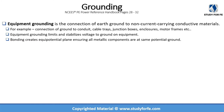Grounding is further divided into two categories: equipment grounding, also called bonding, and system grounding. Equipment grounding is a connection of earth ground to non-current-carrying conductive materials — for example, connection of ground to conduit, cable trays, junction boxes, enclosures, and motor frames. Equipment grounding limits and stabilizes voltage to ground on equipment, and the process of bonding creates an equipotential plane which ensures that all metallic components remain at the same potential to ground.